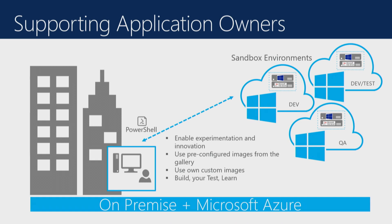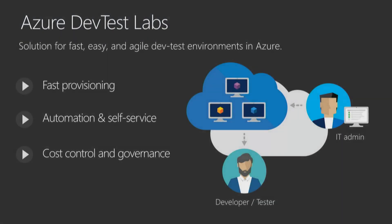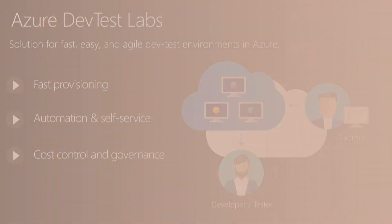We've always heard the developer say, 'Well, it worked on my machine, I don't know why it doesn't work on yours.' This kind of eliminates that. It gets our user acceptance testing and government acceptance testing all deployed consistently from start to finish. Azure DevTest Labs is great for fast provisioning, automation, self-service, and cost control and governance. We don't want our developers deploying 40 CPU, 250 gig of RAM machines, because we'll be broke at the end of the day.